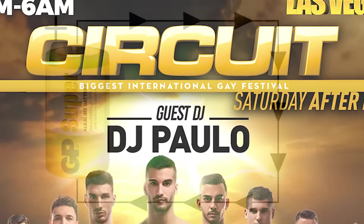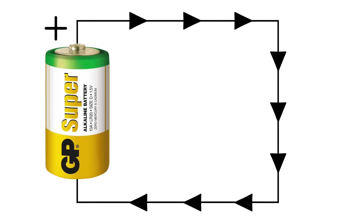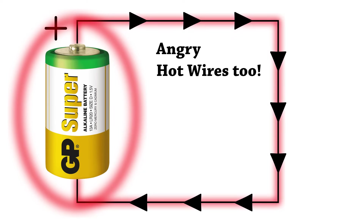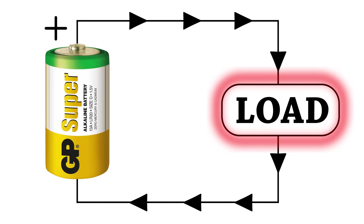This is what we call a circuit. The dictionary defines a circuit as a roughly circular line, route, or movement that starts and finishes at the same place — and that's exactly what's going on here. The electrons are pushed around the circuit until they return to the battery, where they recombine with the atoms inside, forming new compounds and completing the chemical reaction. But if you just connect a wire across a battery, all you're doing is shorting it out — all that chemical energy just goes into heating things up, giving you a very hot and angry battery, maybe even some melted wires. If we connect an appropriate electrical load like a light bulb or a motor, we can make it do useful work.